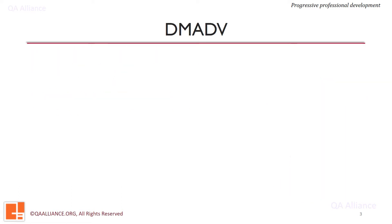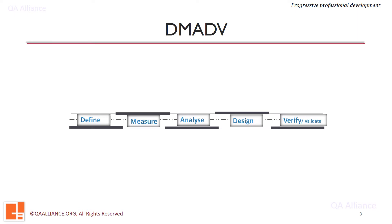To implement DFSS, we make use of the DMADV framework, which is Define, Measure, Analyze, Design and Validate. There are two phases at the end — Design and Verify — which help to design and ascertain the Six Sigma quality in the new product or service.